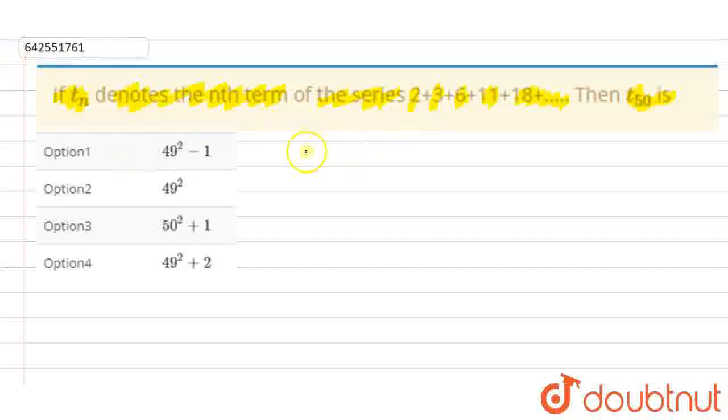We have this series S equals 2 plus 3 plus 6 plus 11 plus 18 and so on. We need to find the nth term, that is, the general term for this series. This series can be rewritten as: the first term is 0 squared plus 2, the second term is 1 squared plus 2,